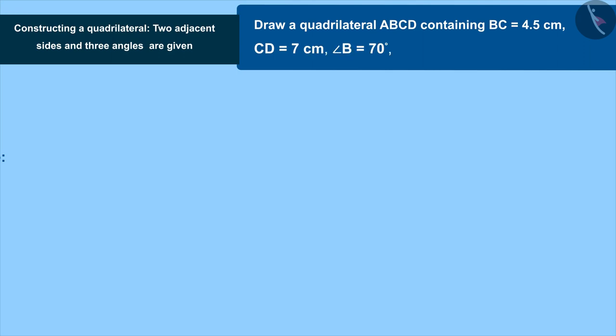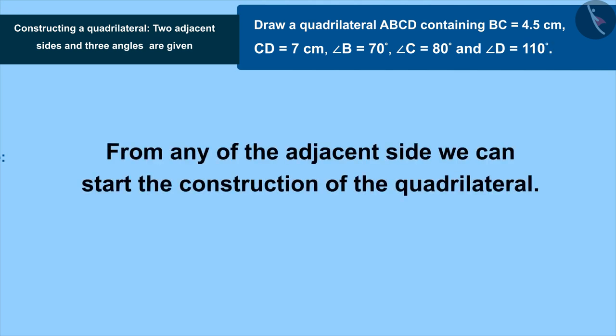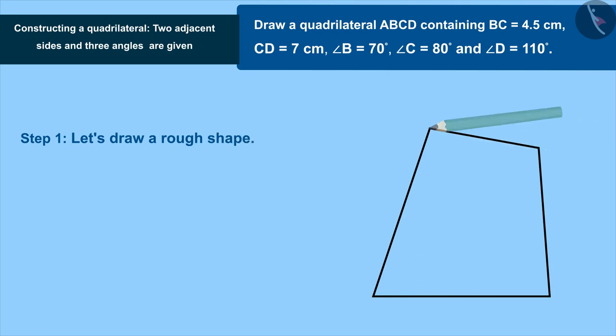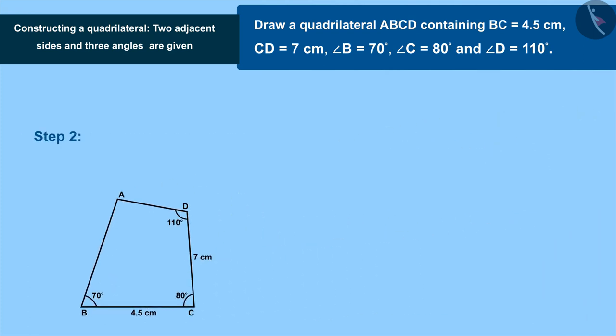To construct this quadrilateral, you can start with any side. We are starting with side BC. First, let's draw a rough shape. Draw side BC equal to 4.5 centimeters.